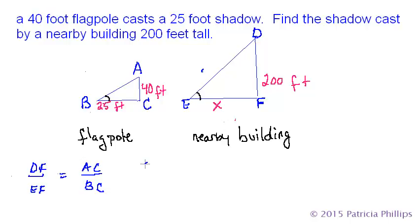Now let's put the numbers in. DF was 200 feet, EF was the unknown shadow cast. And this equals AC, which was 40 feet, over BC, which was the 25 foot shadow on that building. So this is starting to look familiar.